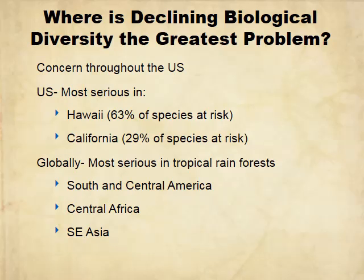Declining biodiversity is a huge issue. In the U.S., it's most serious in Hawaii and California — Hawaii because it's more tropical, and in California 29% of species are at risk, largely due to human activities and the drought. Globally, it's most serious in tropical rainforests — Central and South America, Central Africa, Southeast Asia. These areas have a huge amount of biodiversity, so when they're hit the worst, we're losing insane amounts of species.